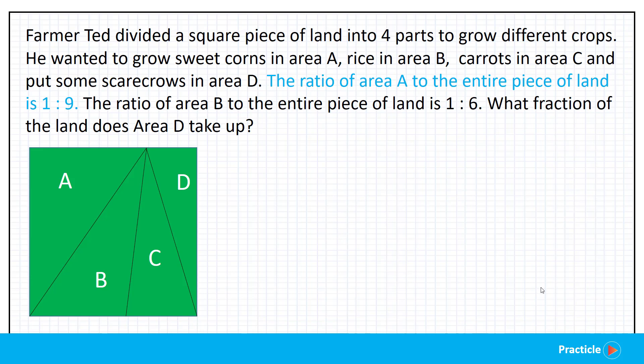Next, we are given that the ratio of area A, the part with the sweet corns, to the area of the entire piece of land is 1 is to 9. So let's think about what this means. When we say that the ratio of area A to the area of the entire piece of land is 1 is to 9, we are saying that area A can be represented by one part and the entire piece of land can be represented by 9 parts.